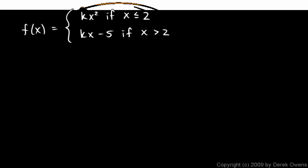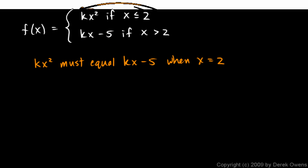So that means that the value that we get on the left side of 2 and the value that we get on the right side of 2 will have to be the same when we get really close to 2. So this is my thought process. I'm going to say that kx squared, this thing, must equal kx minus 5, this thing, when x equals 2.